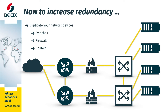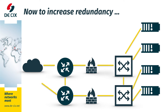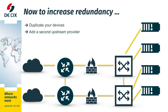Now add a second upstream provider into the mix. With two routers, you now have one upstream on each router. If one of your routers should fail, the second one is still there. Also, if one of your upstreams has a problem, you are still reachable, as you now have two routers anyway. You also need to run BGP now and have your own IP address space. I'll come back to that one later.